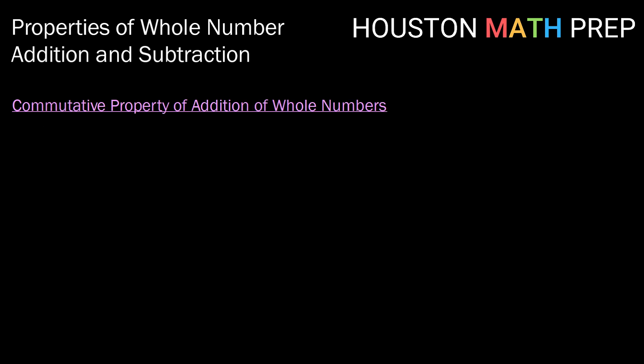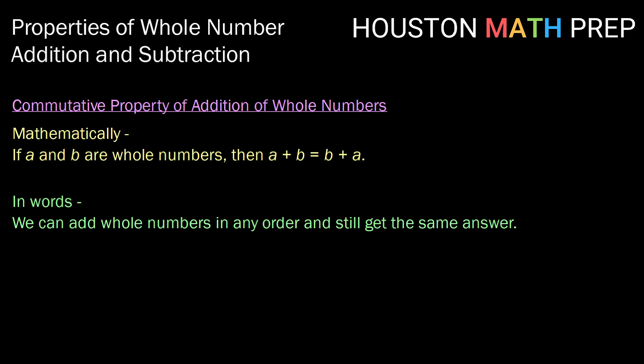Moving on to the next property, the commutative property for addition of whole numbers. Thinking about the word commutative, it comes from commute or to move. So mathematically, this property says if A and B are whole numbers, then A plus B is the same or is equal to B plus A. Again, just trying to think of a way to rephrase that in simpler terms, we might say, we can add whole numbers in any order and still get the same answer.